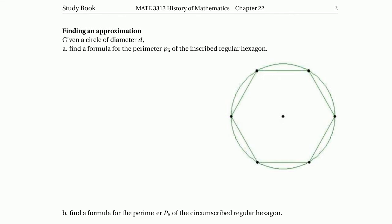Let's say the diameter of this circle is D. We want to find the formula for the perimeter P6 of this inscribed regular hexagon — meaning the total length of the boundary of the inscribed hexagon within the given circle, which has diameter D.